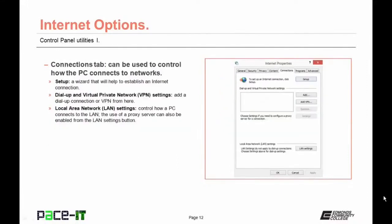The Connections tab controls how PCs connect to networks. The Setup button starts a wizard to help establish an Internet connection. Under Dial-up and Virtual Private Network settings, you can add a dial-up connection or VPN. The Local Area LAN Settings button controls how a PC connects to the LAN, and use of a proxy server can be enabled from here.